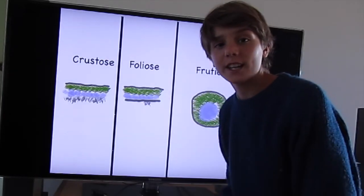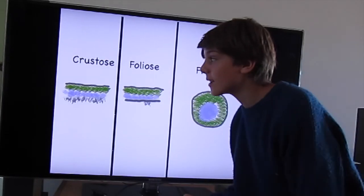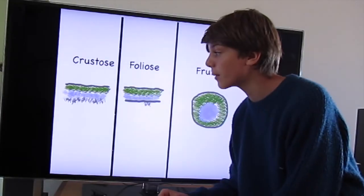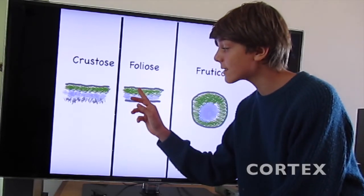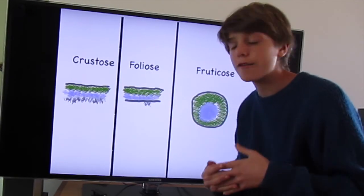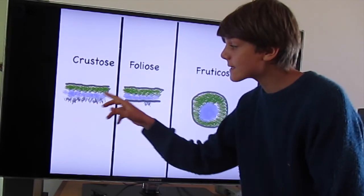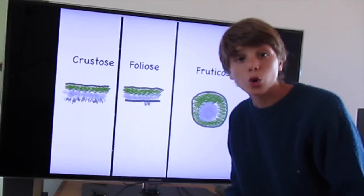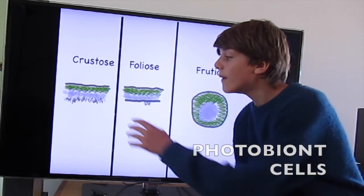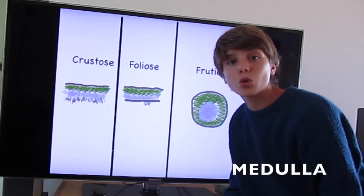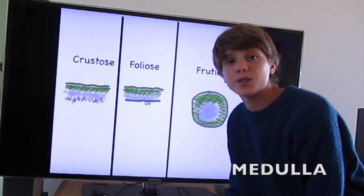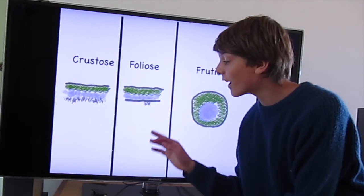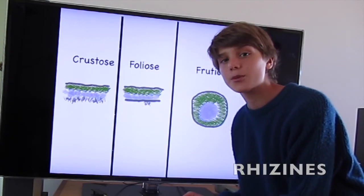This is the structure of the lichen. As you can see, the structure of the crustose and foliose lichens is pretty similar. It starts with the cortex, which is tightly woven in hyphae. Next are the cells pointing to the algae or cyanobacteria, also known as the photobiont cells. Next is the medulla, where the fungi stores all the nutrients that it scabs off the photobiont cells. And finally, the rhizines, which connect it to the substrate.